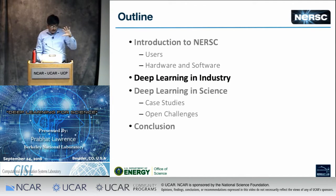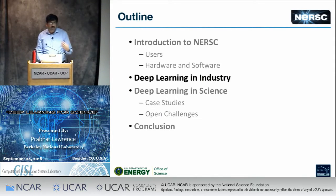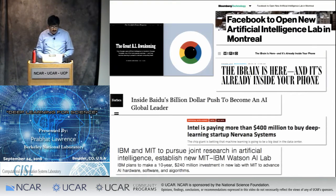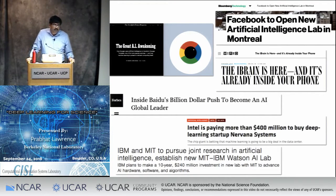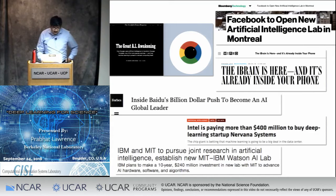Just in case you haven't been tracking the media recently, big things are happening. Microsoft and Google have both reinvented themselves as AI-first companies. Facebook and Intel have spent a lot of money opening new research labs and buying startups. In aggregate, more money is being spent on AI right now than any other program in the DOE, for example. Something is going on here — why now?